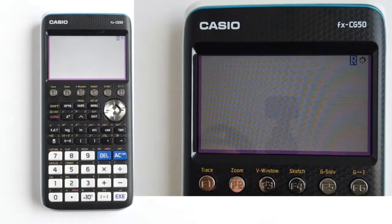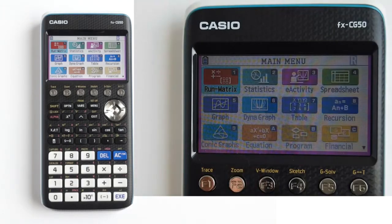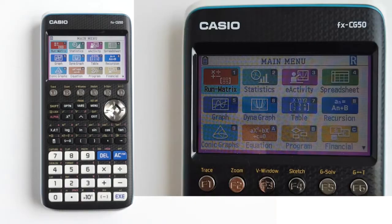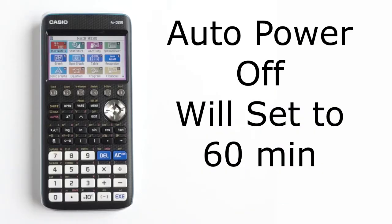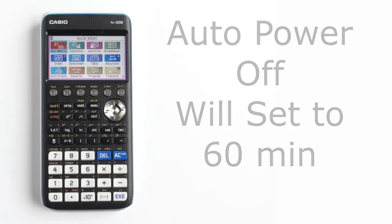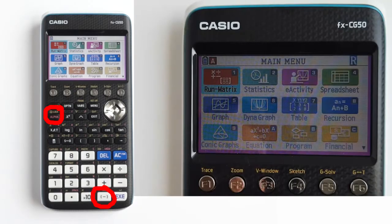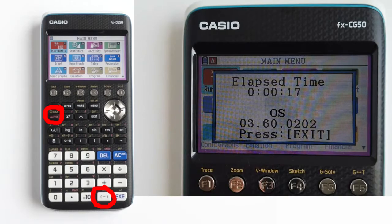When you are in exam mode for the UK exam, you will see this flashing R in the upper right of the screen. That flashing R will slow down after 15 minutes in exam mode. You will also see this magenta colored border on the sides and the bottom of the screen. If you do not see an R in a magenta border, then you are not in UK exam mode. When in UK exam mode, the auto power off is set to 60 minutes. To see the elapsed time, press the red alpha button, then the negative sign button. The screen will appear briefly, about 3 seconds, showing the elapsed time.